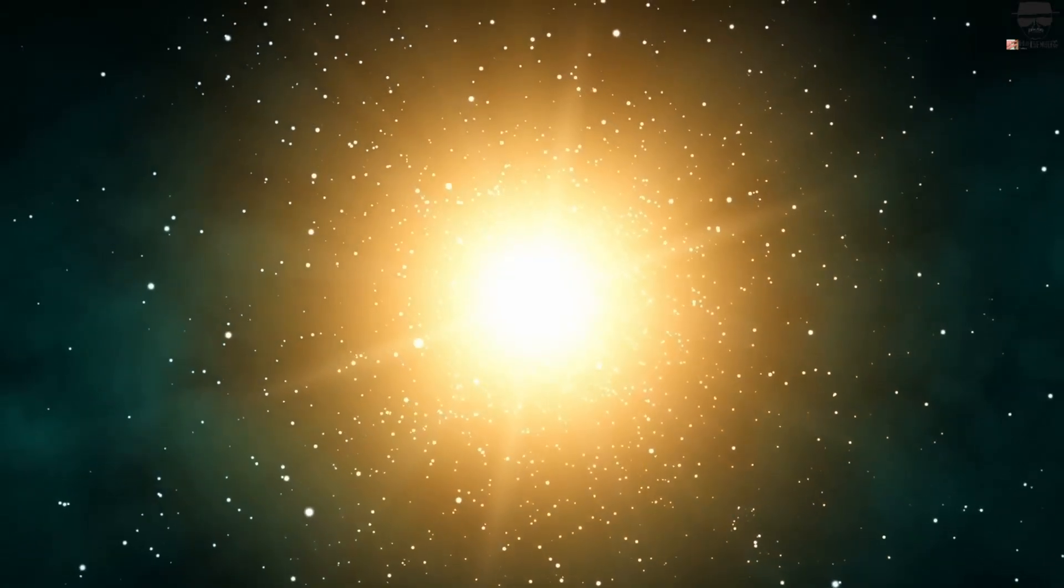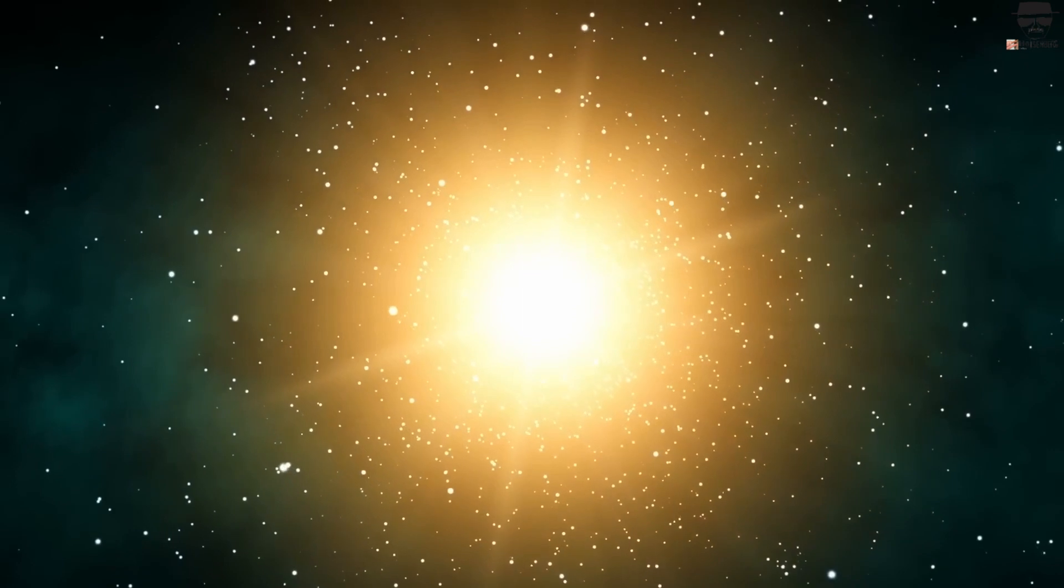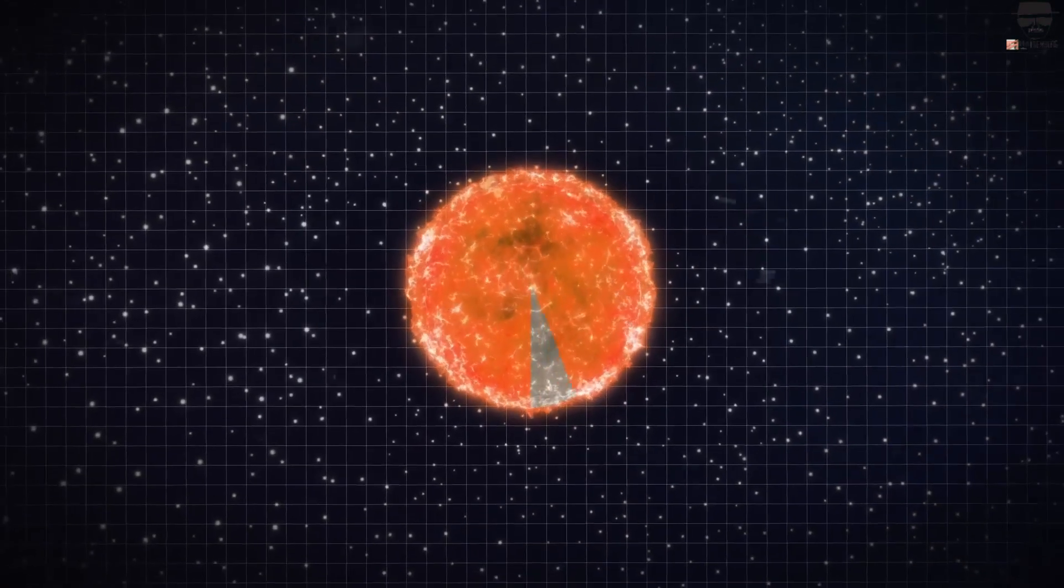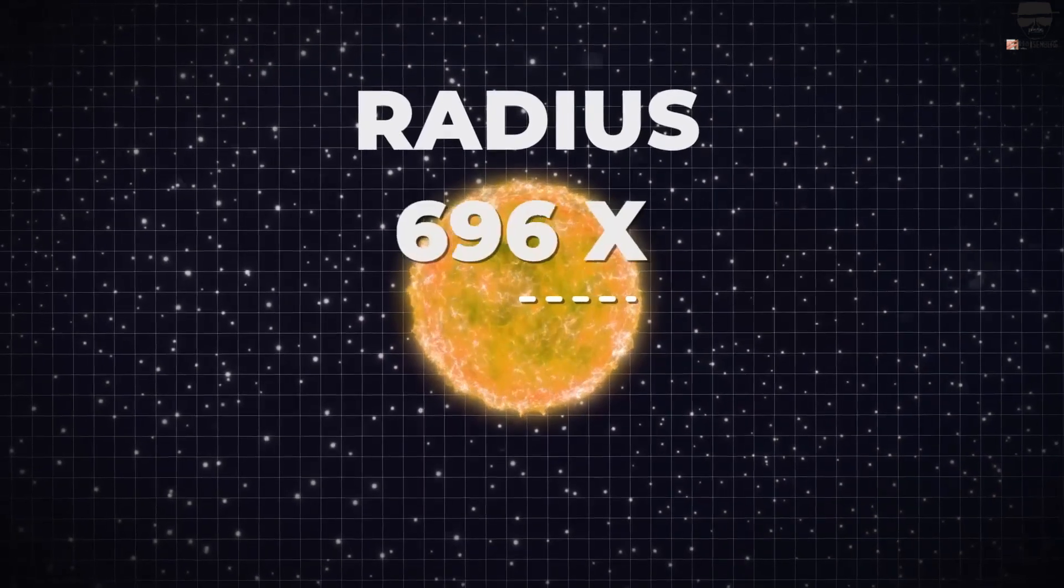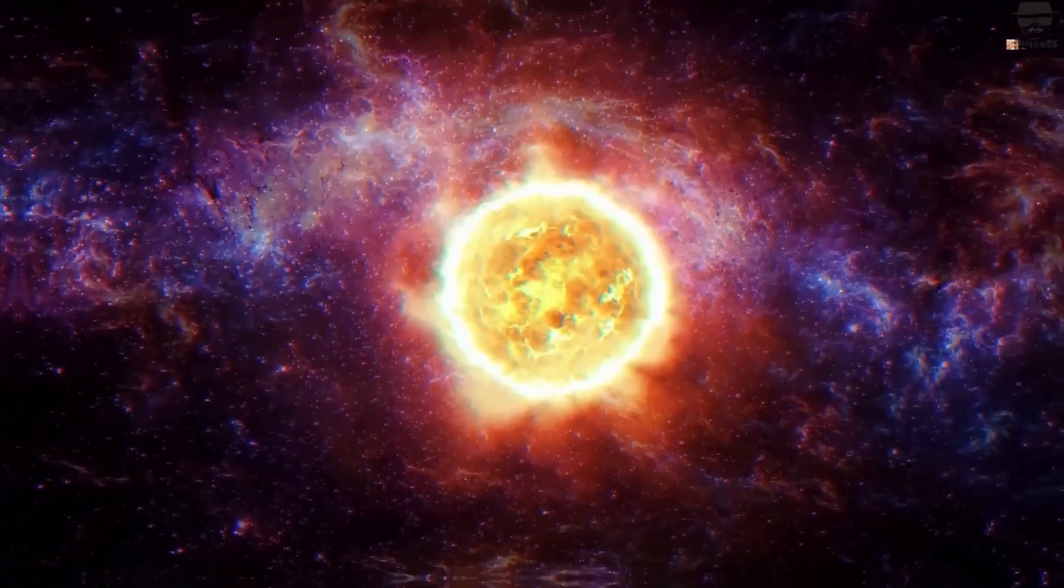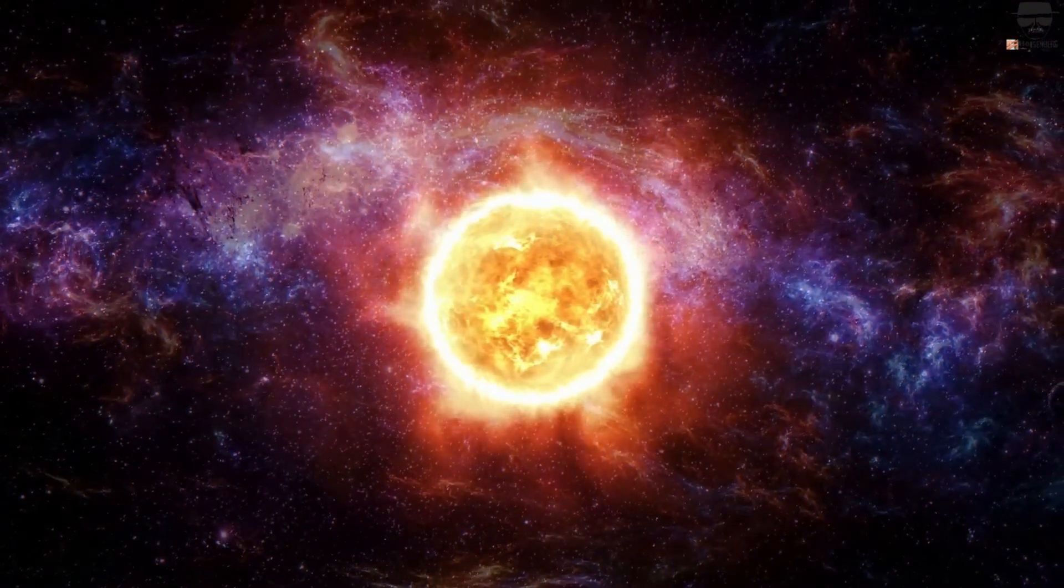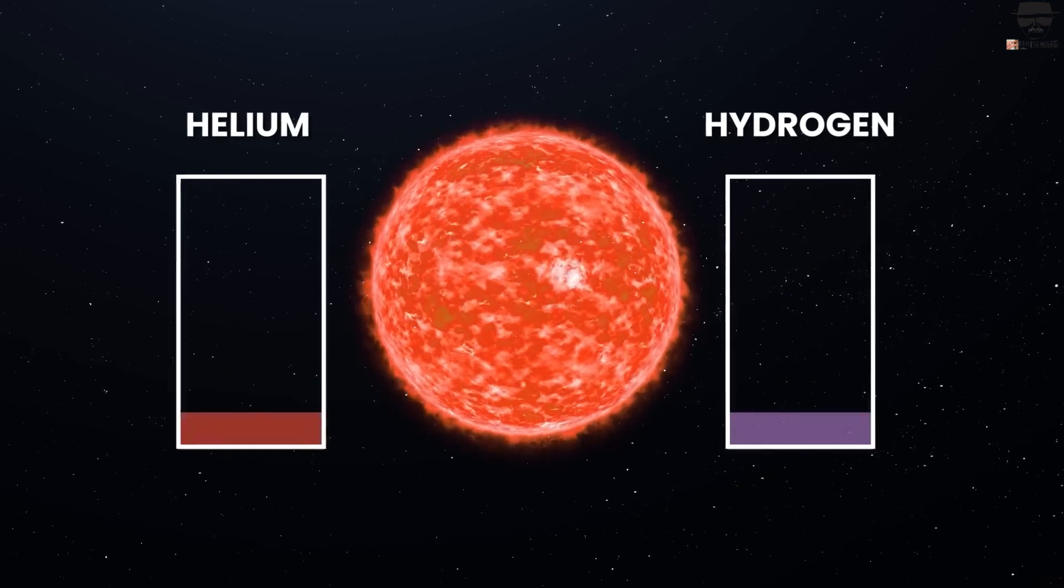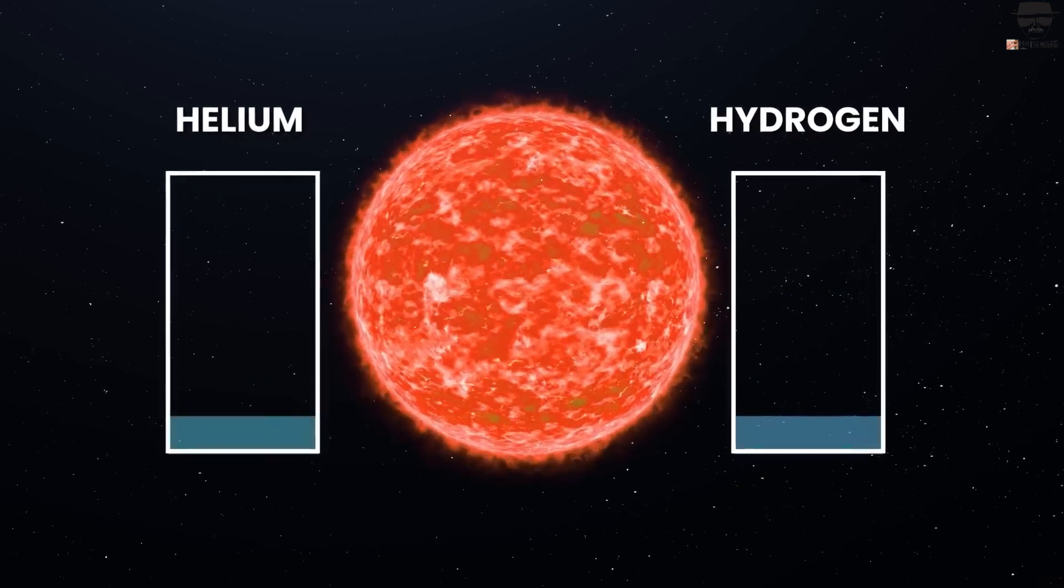Betelgeuse was probably already a very large, but not particularly dense star before it developed into a red giant. In its current state, Betelgeuse has a diameter that is many times larger than the sun, and although its fuel reserves are decreasing, it shines 10,000 times brighter. When the fuel supply of a star is finally exhausted, it will eventually collapse under its own weight.